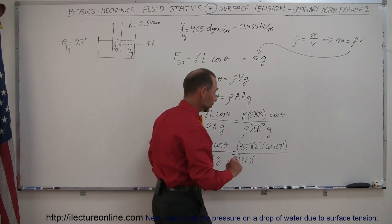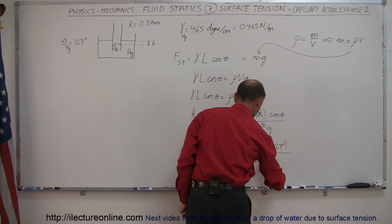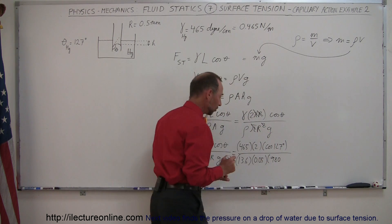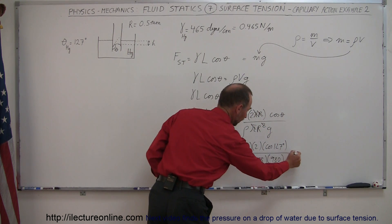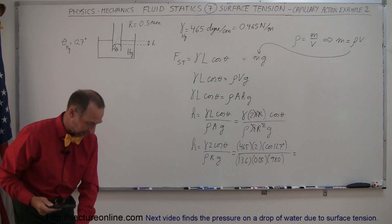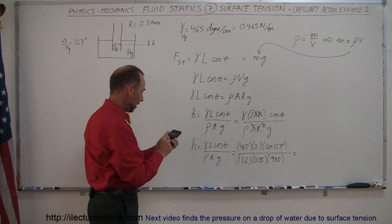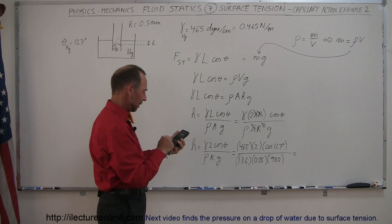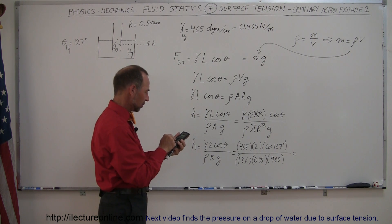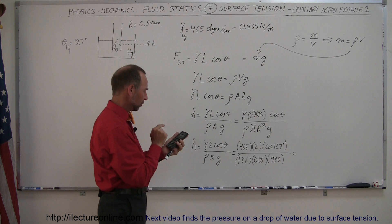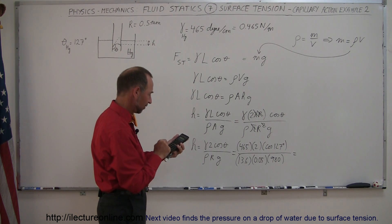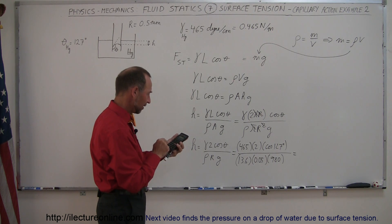We have to convert that to centimeters. We're in CGS units, so 0.05 centimeters. And then g would be 980 centimeters per second squared. Got to close that up. Let's find out how far down the mercury gets pushed. So we have 465 times 2 times the cosine of 127 degrees. That's a minus 0.6 divided by 13.6 divided by 0.05 and divided by 980. And what do we get?